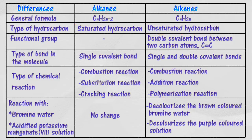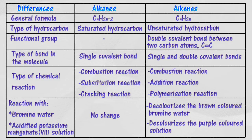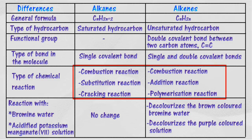Alkenes are unsaturated hydrocarbon compounds. The functional group of alkenes is the double bond between two carbon atoms; alkenes contain at least one double bond between two carbon atoms. Alkanes are less reactive — they can undergo combustion reactions, substitution reactions, and cracking reactions.